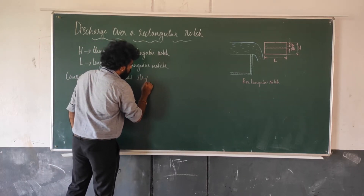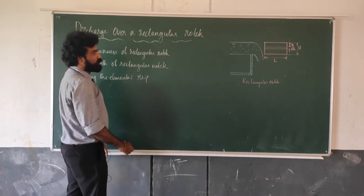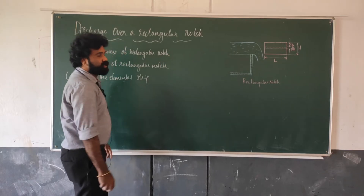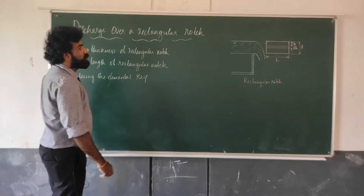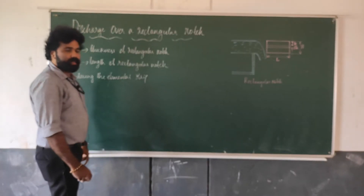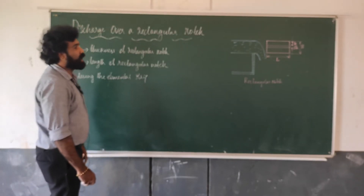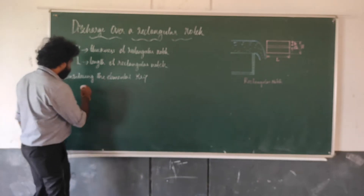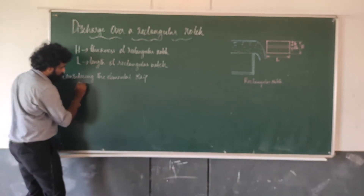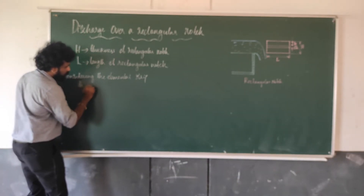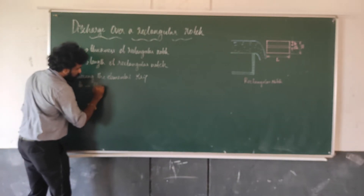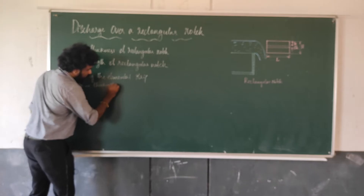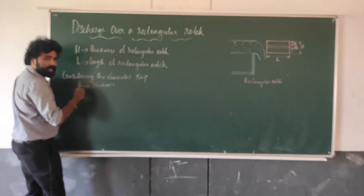An elementary strip is considered. The elementary strip has a thickness dh and length L, at a distance h from the top surface. The dh thickness runs along length L.